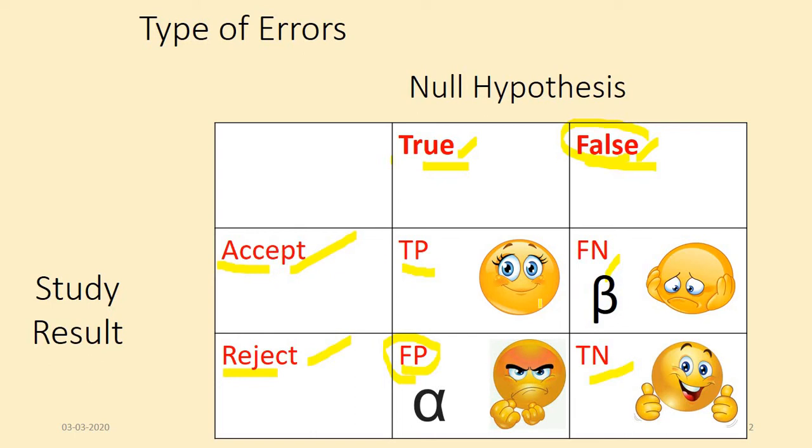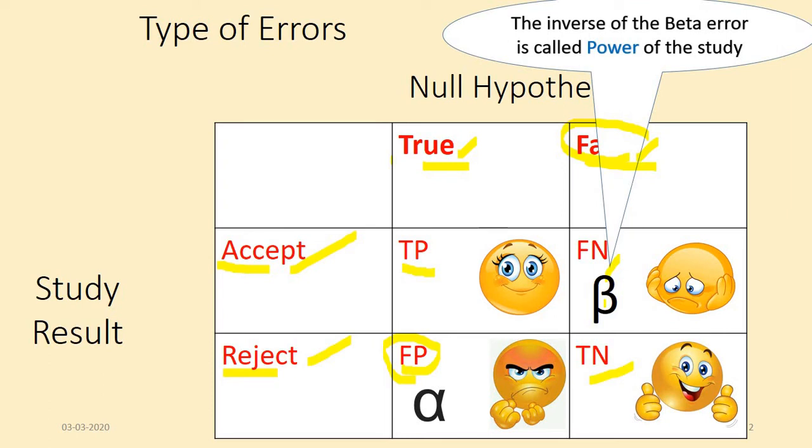Accepting false is least dangerous when compared to rejecting the truth. So, we always keep beta error at 10% or 20% before the start of the study, and alpha level at 5% or 1%. The inverse of this beta error is called power of the study.